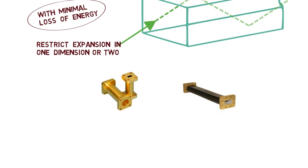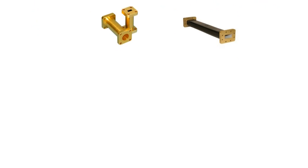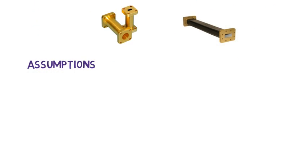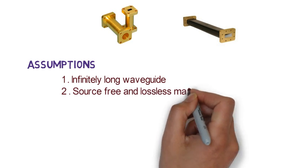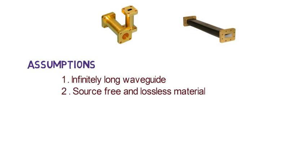During our whole study about waveguide we will have to take some assumptions. The first assumption is the waveguide is infinitely long and uniform along its length. The second assumption is the waveguide is filled with a source free and lossless dielectric. The meaning of source free is that the material inside the waveguide should have zero volume charge density and lossless means the inside material should have zero conductivity and finite values of permittivity and permeability.